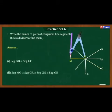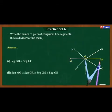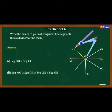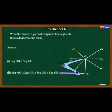Answer 2: Segment MG is congruent to segment GR, which is congruent to segment GN, which is congruent to segment GE.